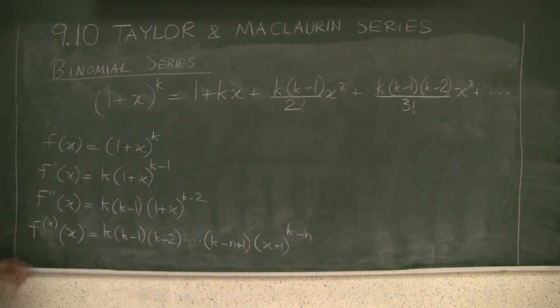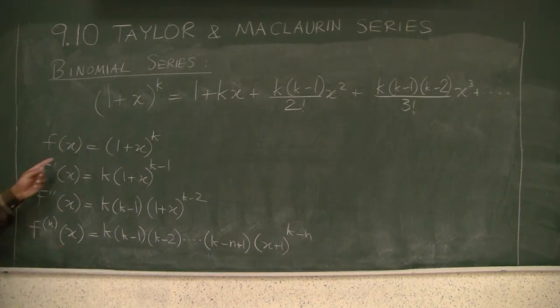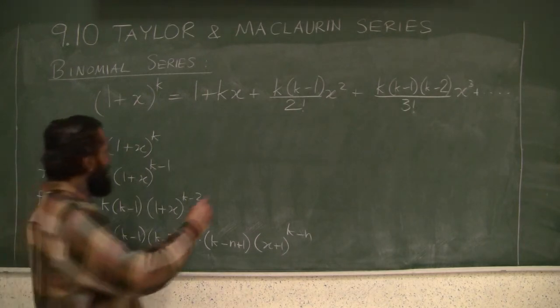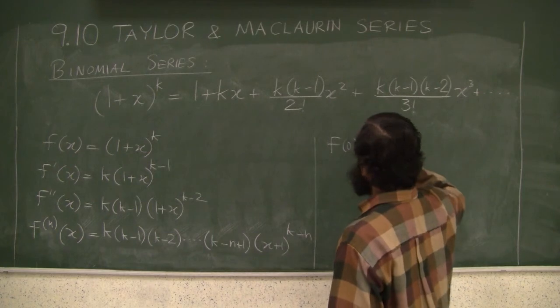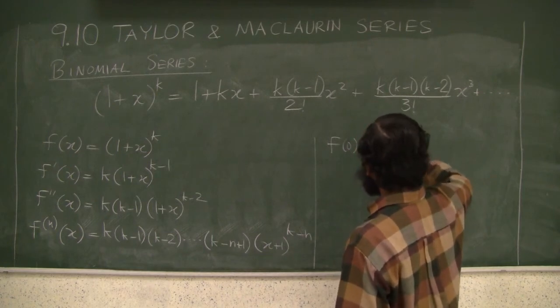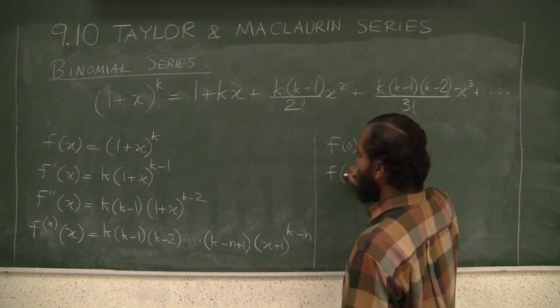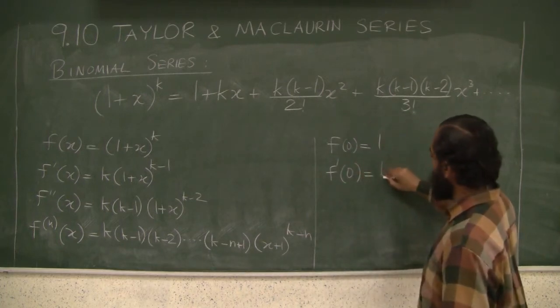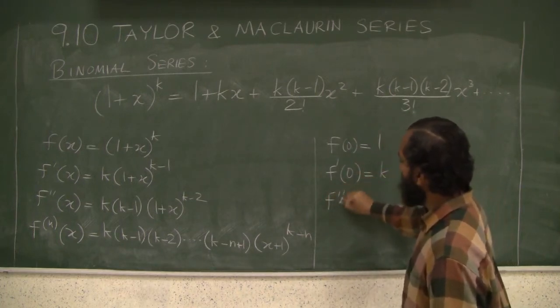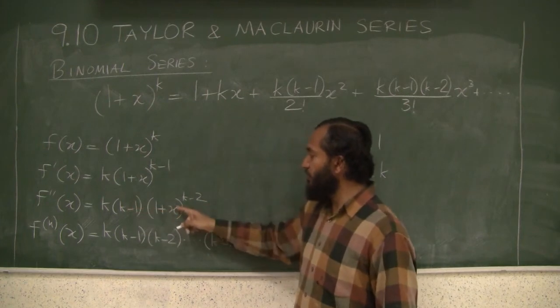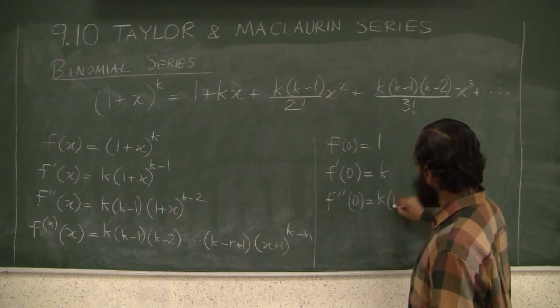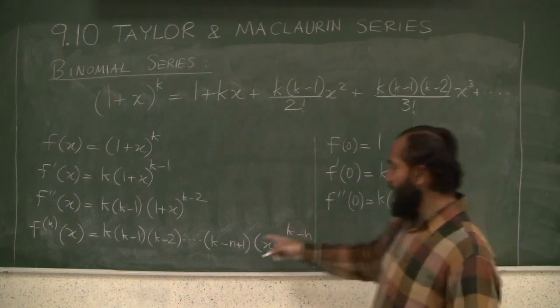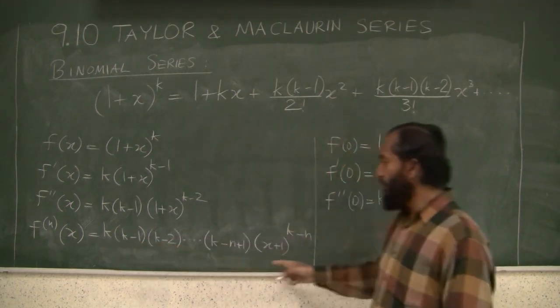Now if you plug them at 0, what happens? f(0) is just 1. f'(0) is just k—plug in 0 for the x's, so I just get k. f''(0) is k times (k-1), so I end up getting all the constant terms.